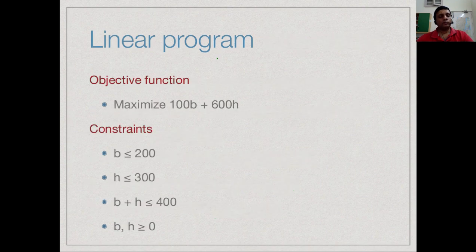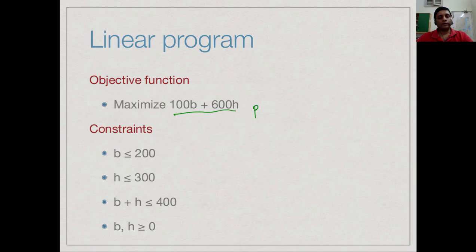Now we can put these all together into a set of inequalities and an objective function and call it a linear program. Our objective is to maximize the profit, so this is what we are trying to maximize: the quantity 100b plus 600h. We cannot choose arbitrary values - if b and h can vary we can make them as large as we want, but there are these constraints. So b and h must lie between 0 and 200 and 0 and 300 respectively, and together they can be no more than 400. These are the constraints we wrote in the previous page, now we are just writing them down as a system of equations or inequalities.